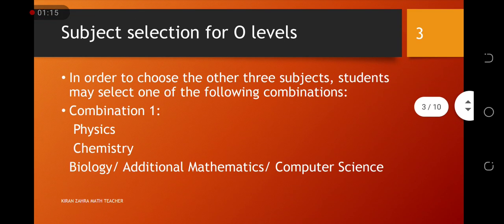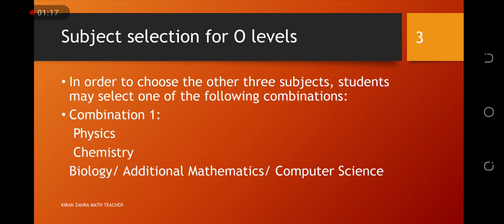So basically, merhe lihaz se, jho mein aap logon ko recommend karungi, mein aap ko two combinations jho hai wo recommend karungi. Uske reason ko hum baad me discuss karungi ke what is the reason behind. So first combination, jho bhoat saray students ko select karna chahiye, that is the science group. Science group mein au bhi subject hotte hain, wo hum baad me discuss karengi.